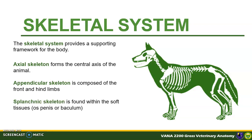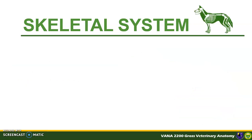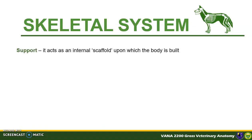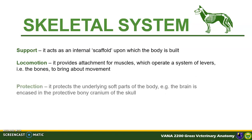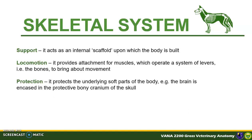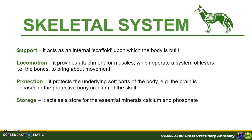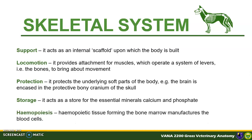The splanchnic skeleton is found within the soft tissues. In the case of the dog, it is the os penis or the baculum. Specifically, the functions of the skeletal system are: for support, as it acts as an internal scaffold upon which the body is built; for locomotion, as it provides attachment for muscles which operate a system of levers; for protection of underlying soft parts of the body; and it acts as a storage for essential minerals like calcium and phosphate.